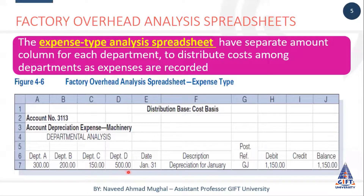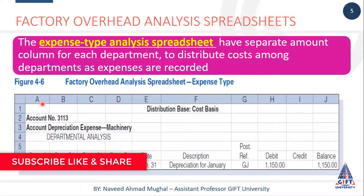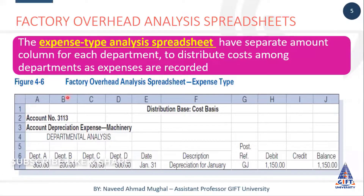Lekin is account ke format ke sath hum department wise bhi columns add kar dete hain. Ye department wise columns is liye karte hain ke hem logon ne yeh wali jo depreciation is mahine ki banaai hai, hem ne har ek department ko kitni kitni charge ki hai woh hum log yahan peh show karenge. Agar hamare paas departments nahi hain to phir ham yeh wala portion is sheet mein nahi banayenge - sirf expense ka ek account banega.